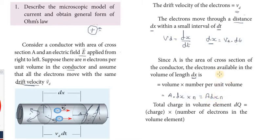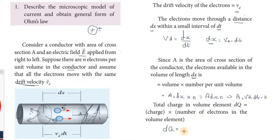The total charge in the volume element dq equals charge e into number of electrons, which is e into n into A into vd into dt.